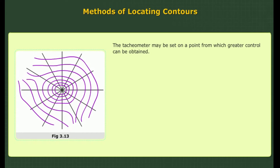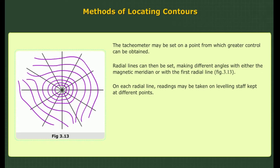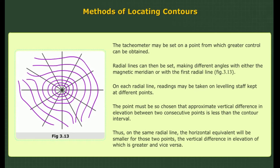The tachymeter may be set on a point from which greater control can be obtained. Radial lines can be set making different angles with either the magnetic meridian or with the first radial line. On each radial line, readings may be taken on the levelling staff kept at different points. The points must be chosen such that the approximate vertical difference in elevation between two consecutive points is less than the contour interval. On the same radial line, the horizontal equivalent will be smaller for those two points where the vertical difference in elevation is greater, and vice versa.